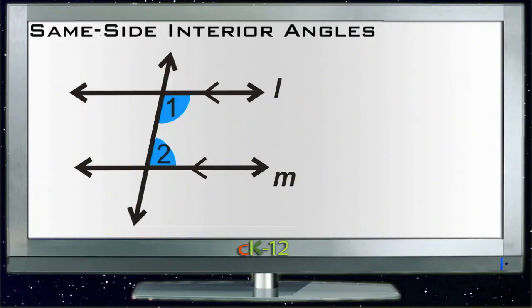The theorem for same-side interior angles is a pretty logical extension of the theorem for alternate interior angles. Alternate interior angles, as we saw before, are two angles that are on opposite sides of the transversal and they're always equal.